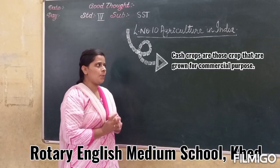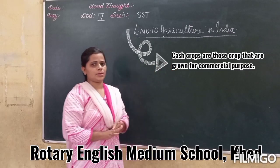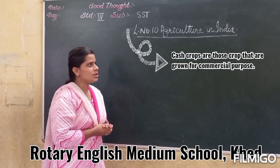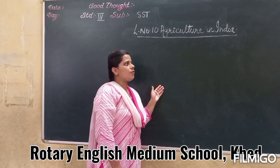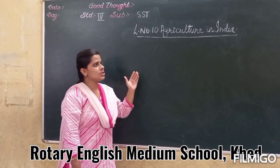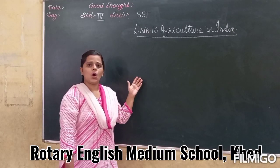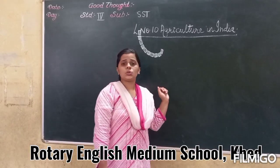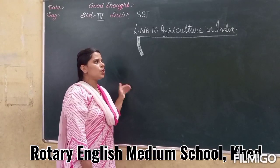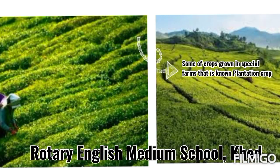Crops that are grown for commercial purpose — this crop helps the farmer to earn money. The important cash crops of India are sugarcane, jute, cotton, oilseeds, etc. These are the cash crops grown in India. Now, some of the crops are grown in a special farm that is known as plantation.